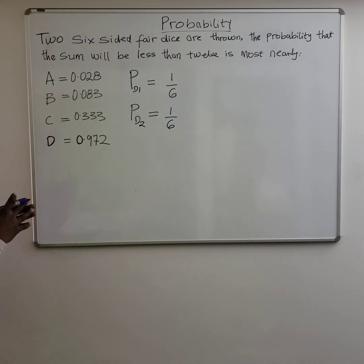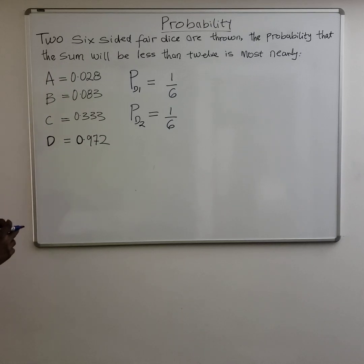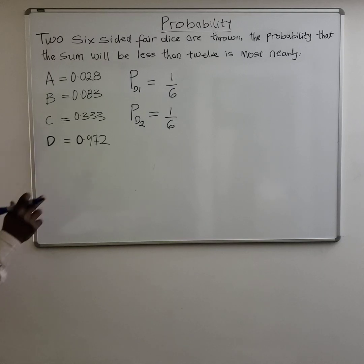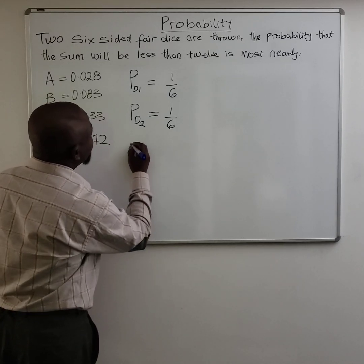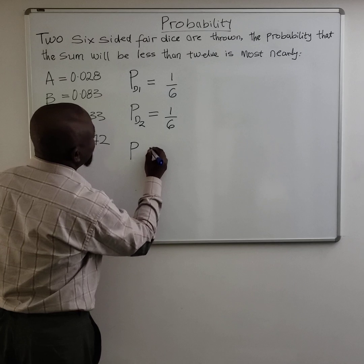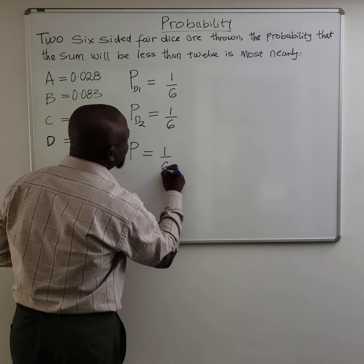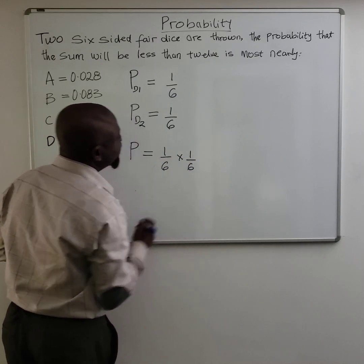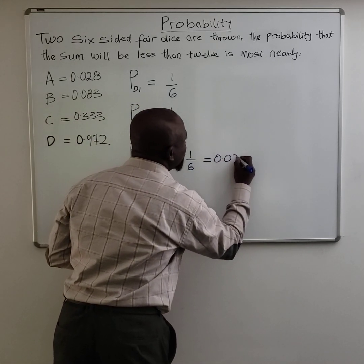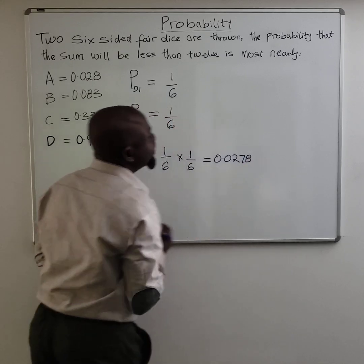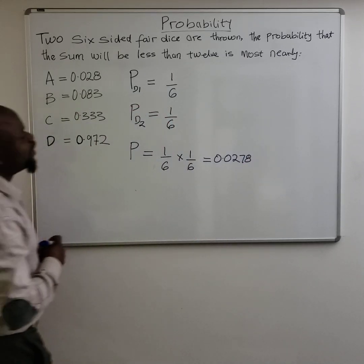Every other possibility will give you a sum less than 12. This is the only situation where we can have a sum of 12 — when the first die gives you a six and the second die gives you a six. That's only one possibility. So the probability of getting a six and a six on these two dice becomes one over six multiplied by one over six, which gives you 0.0278.